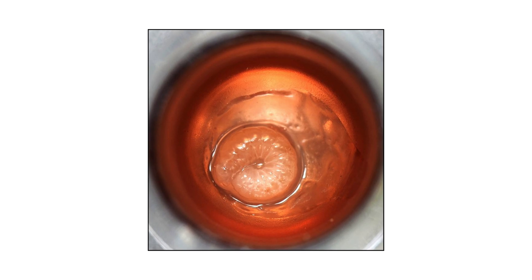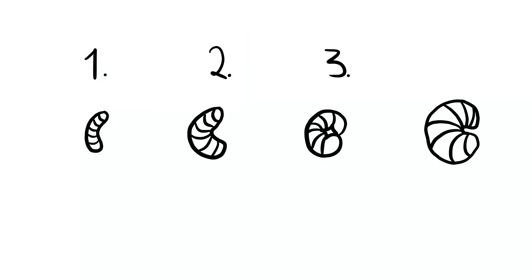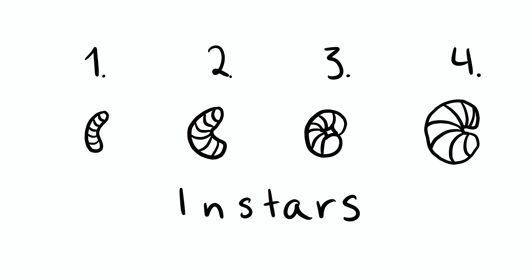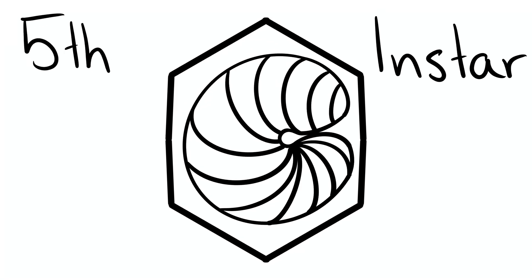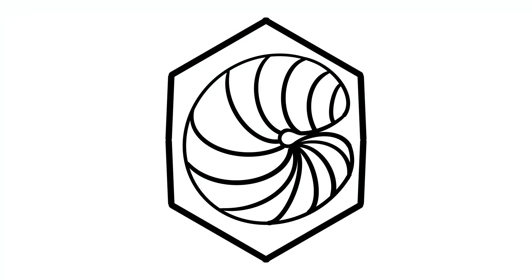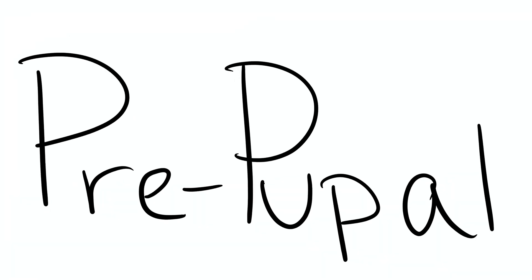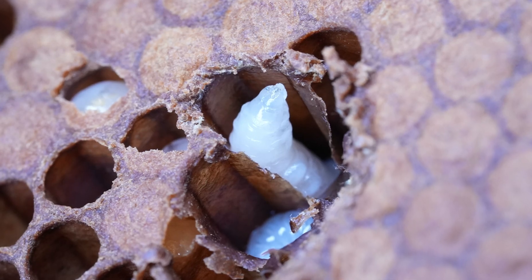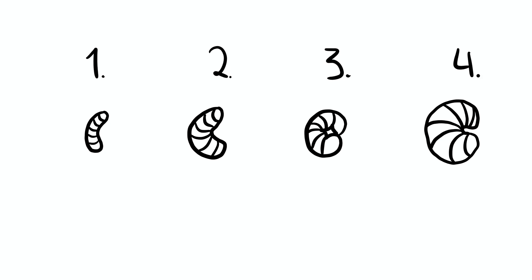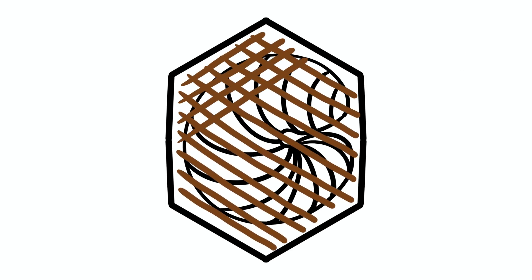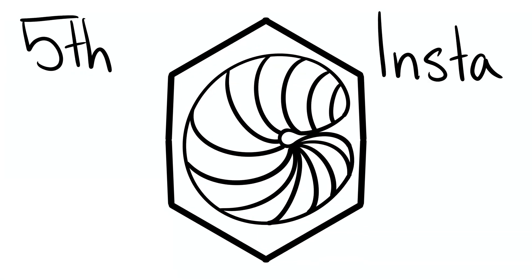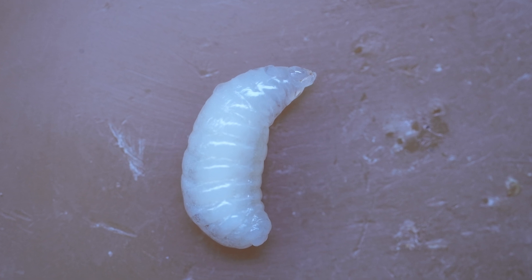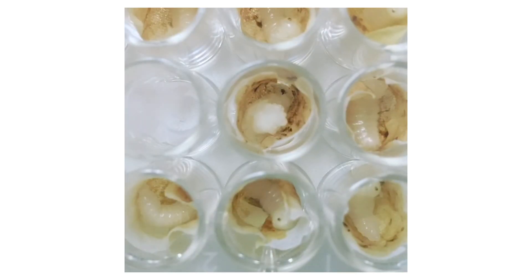The fourth molt ushers in the fifth larval instar, and that fifth instar is the pre-pupal stage. The egg and larval instars one through four all happen in open cells. Then the bees cap that cell, and the larva undergoes its fourth molt to become the fifth instar — the pre-pupa. At that point, it still looks like a larva; it's just pointing at you in the cell if you were to uncap it.